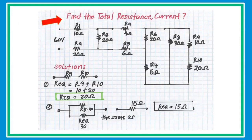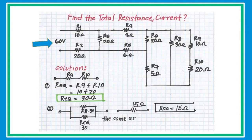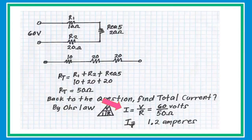Returning to the previous equation to find the total resistance and current: given that our voltage is 60 volts, using Ohm's Law — I equals V over R — with 60 volts and a total resistance of 50 ohms, the total current is 1.2 amperes.